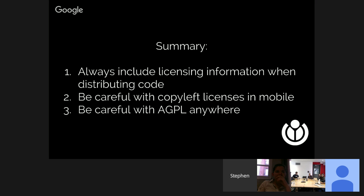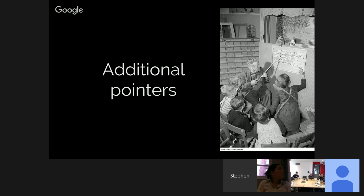In summary, three things to keep in mind: always include licensing information when you distribute code. If you're using a copyleft license in mobile or distributing the binary, consider it in a little more detail. And be extra careful if you see the AGPL anywhere — discuss with us if you think it might be appropriate.